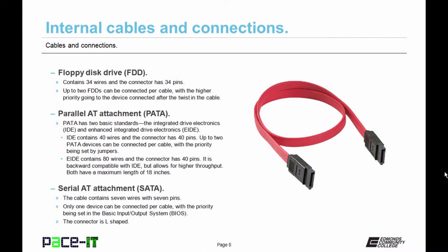Now moving on to more modern standards, we have the serial AT attachment, the SATA cable. Now this cable contains seven wires with seven pins. Only one device can be connected per cable with the priority for SATA devices being set in the BIOS. The connector is L-shaped so it can only be inserted one way. That's a keyed connector.